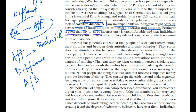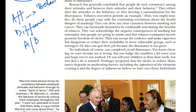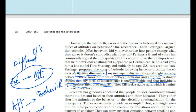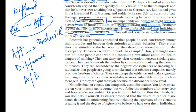Leon Festinger argued that any form of inconsistency is uncomfortable, and individuals will therefore attempt to reduce it. We defined cognitive dissonance as any incompatibility an individual might perceive between two or more attitudes, or between behavior and attitude. We also saw that attitudes follow behavior. In the next lecture, we will continue with this concept.